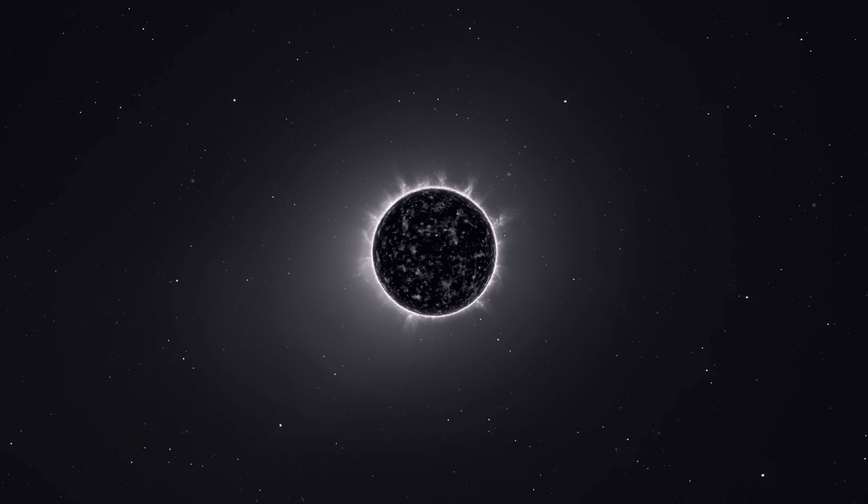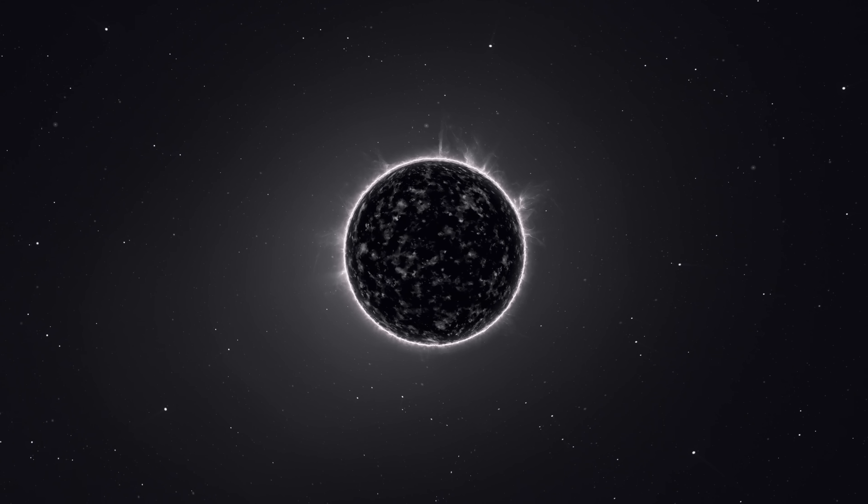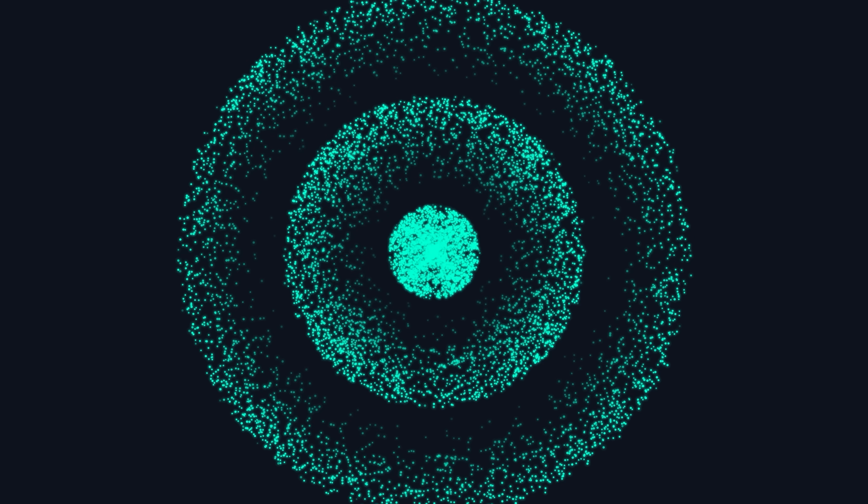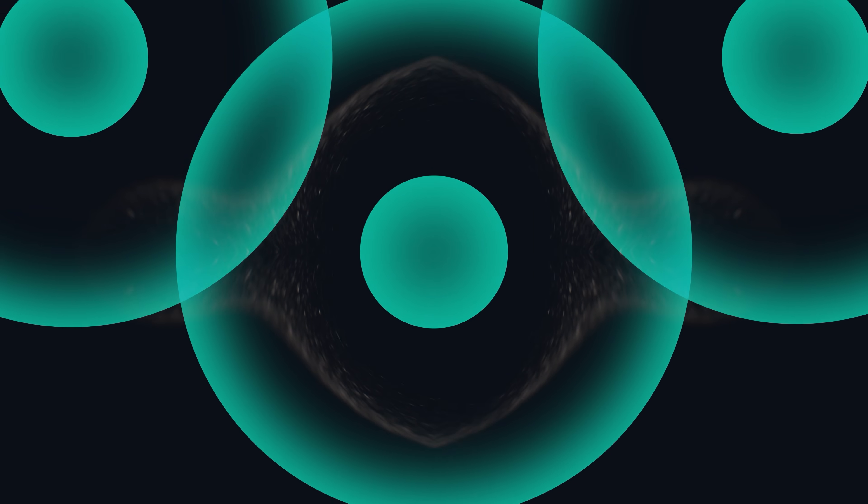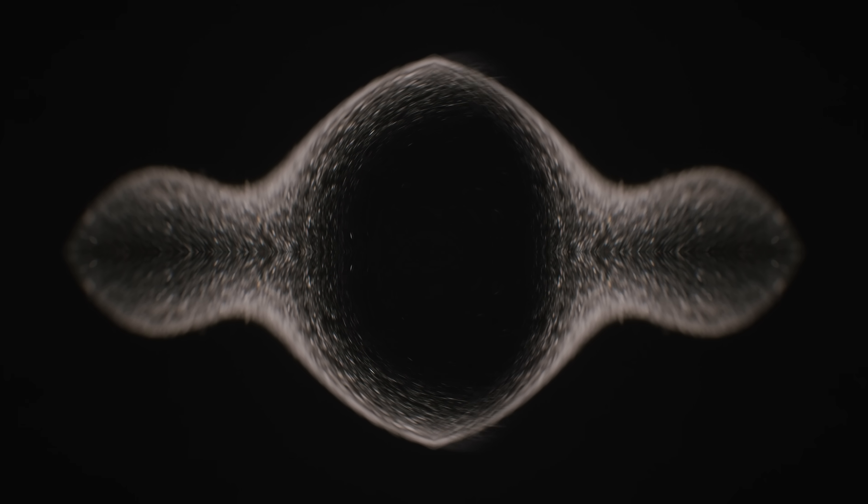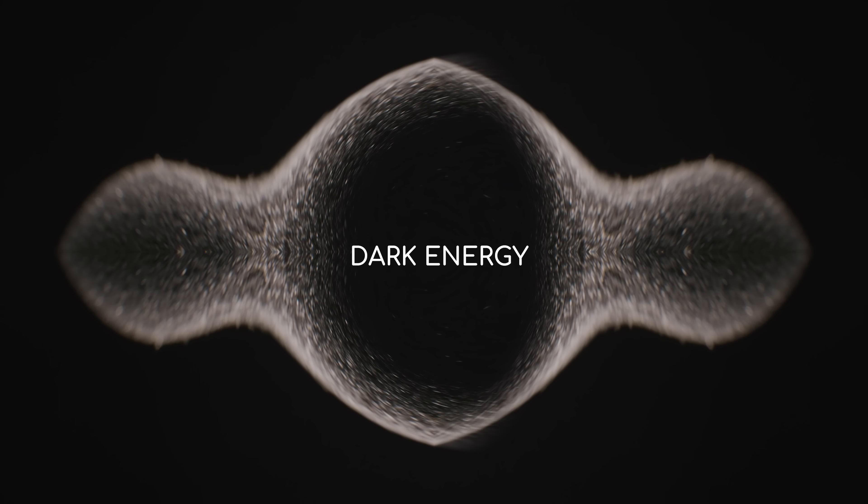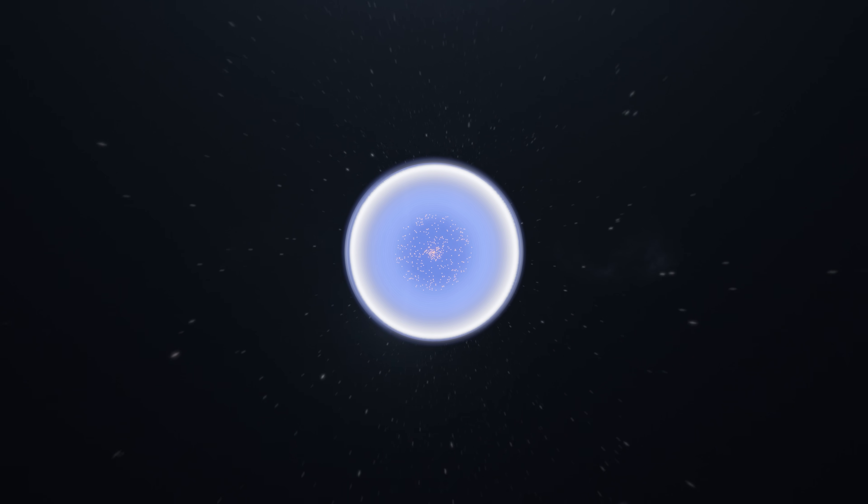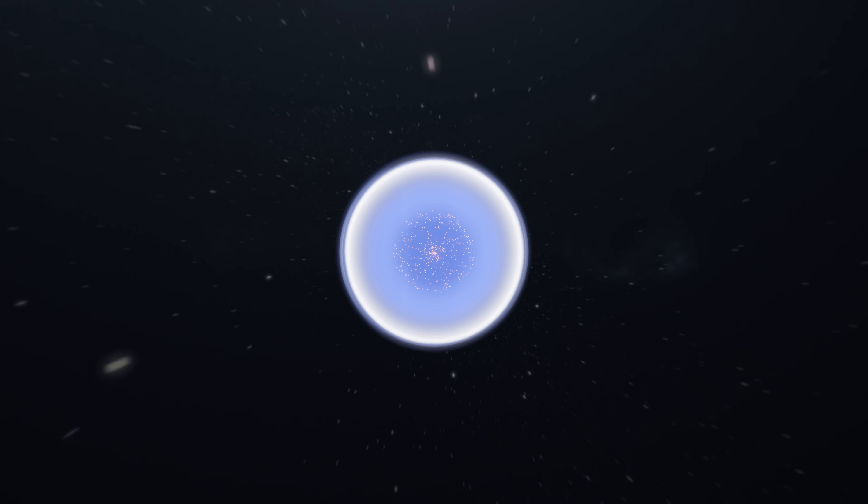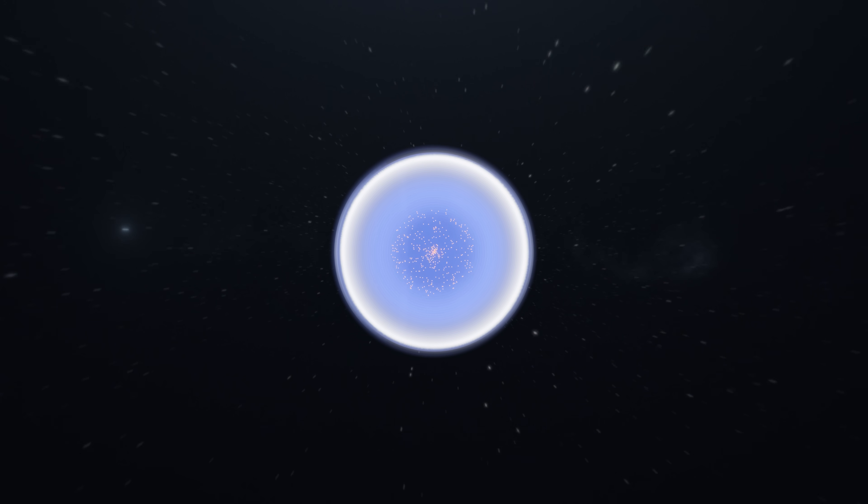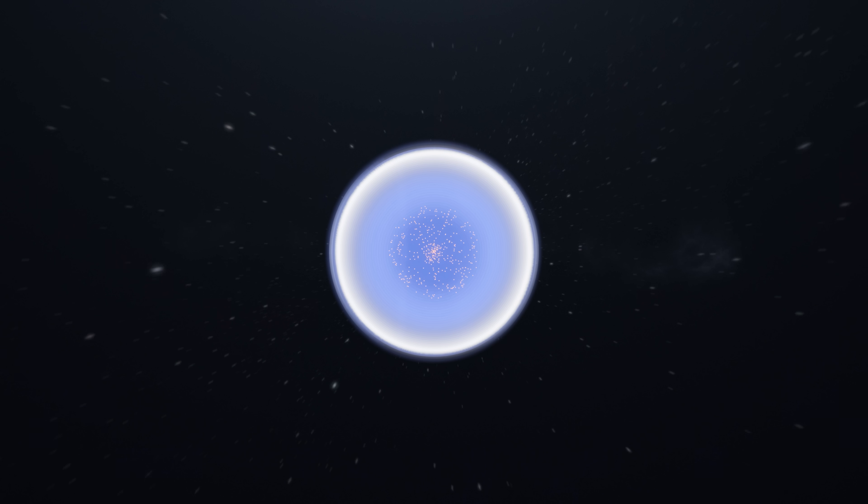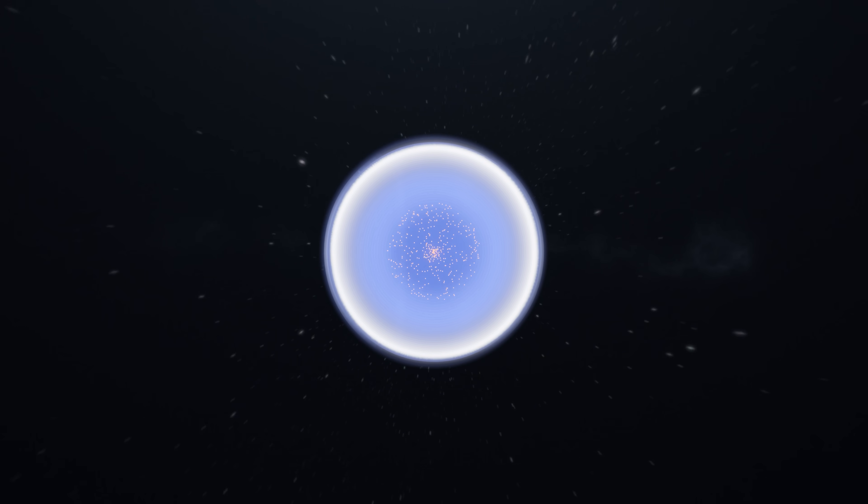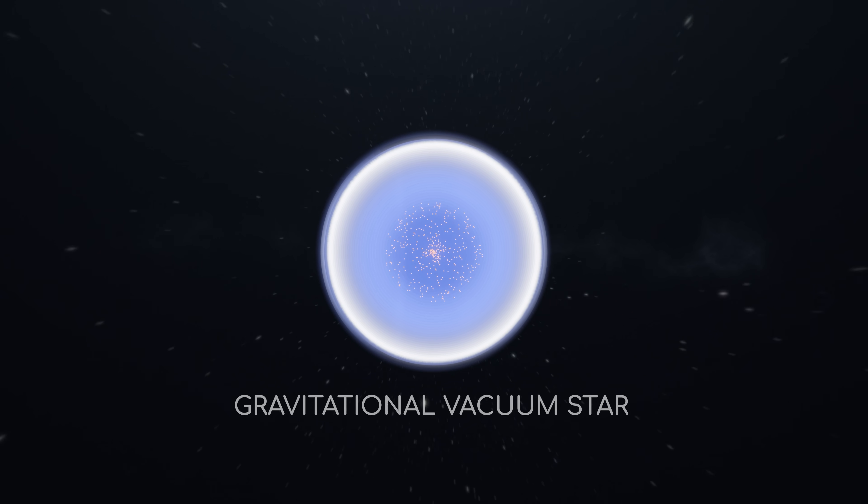If you've seen some of our other episodes, this might ring a bell or two. A constant positive energy density, paired with a constant but negative pressure. That doesn't sound like any star we've seen before, but it's starting to sound more like a mysterious component of our universe: dark energy. And since the pressure and energy density in a gravistar are equal in magnitude, it's not just any kind of dark energy. Those are the exact properties of vacuum energy. That's why this special exotic star came to be known as a gravitational vacuum star, or gravistar for short.